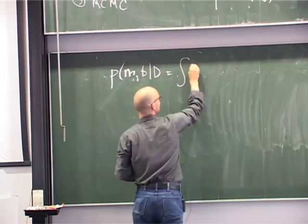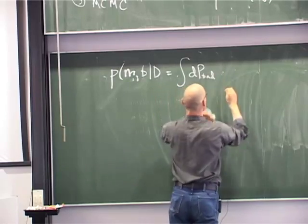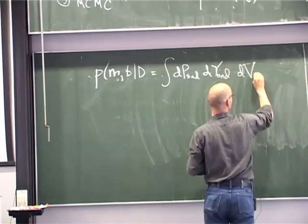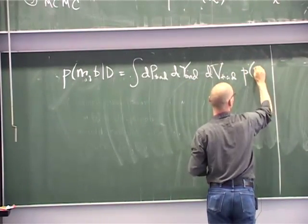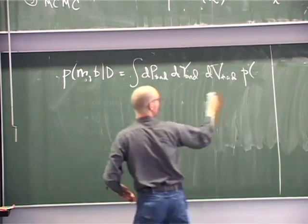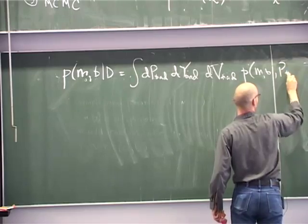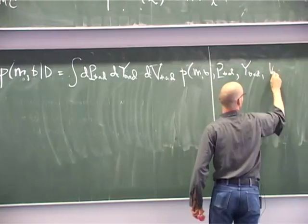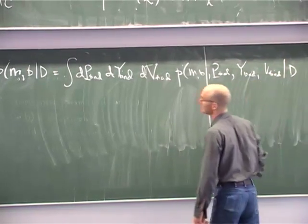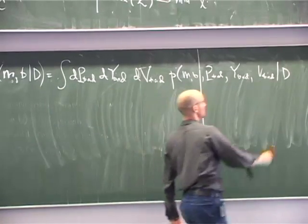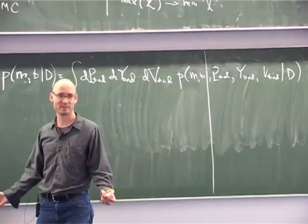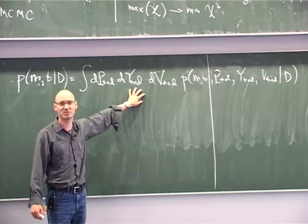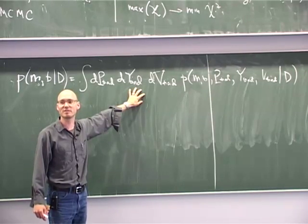The parameters M and B are the marginalization over P bad, Y bad, and V bad of P of M, B, P bad, Y bad, V bad given the data. Right, that's marginalization. You have a five-dimensional space. You only care about two of the dimensions, you marginalize over the others. Note that you can only do this if you're a Bayesian.